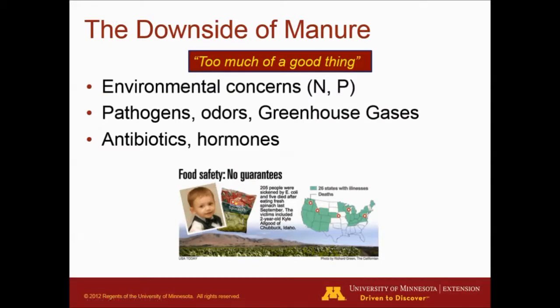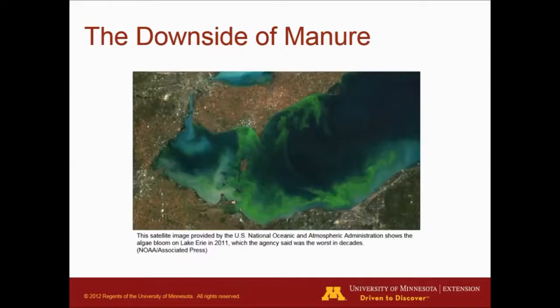The downside of manure — essentially too much of a good thing. There are environmental concerns in terms of nitrogen and phosphorus, and we're going to be covering some of those issues in the next presentation. We also have other issues with manure like pathogens, odors, greenhouse gases, and antibiotics and hormones. Some of these problems are the ones that hit the news — for example, food safety issues related to E. coli in vegetables, or algae blooms in different lakes.